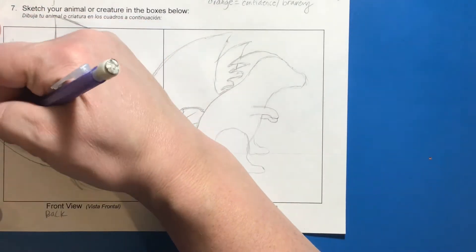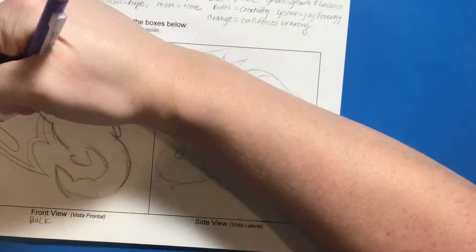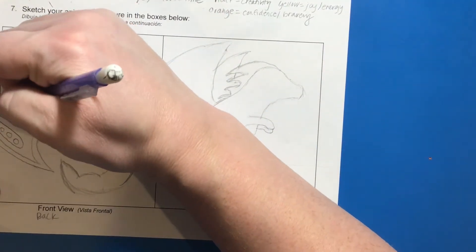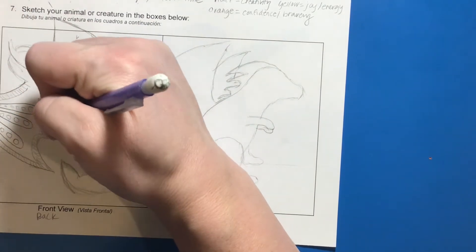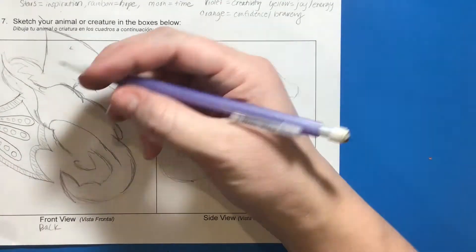As you are sketching, make sure to think about what features you need to include to make your animal inspiration clear. So for example, if you're creating an elephant, you'd want to make sure to include the big ears and the long trunk.